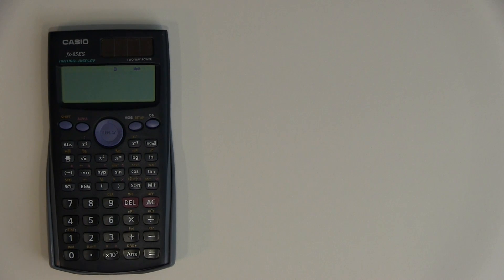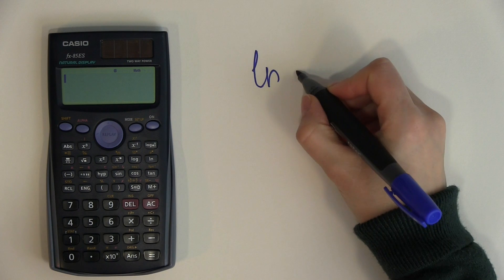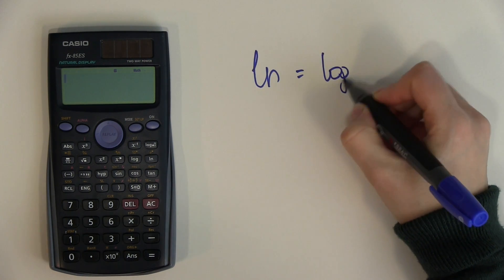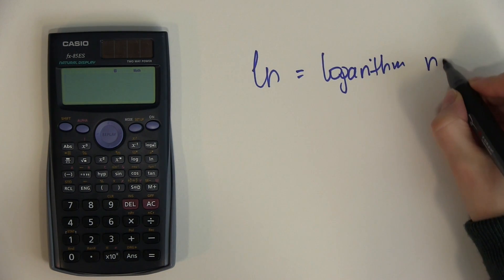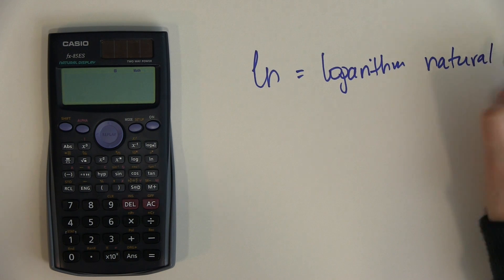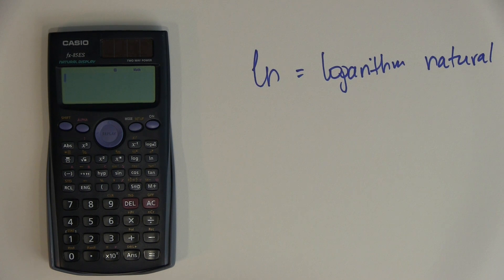There is one more feature I would like to spend some time on before we go to practical examples, and that is the LN button. LN stands for logarithm natural, and sometimes you need to use it — for example, when you're trying to calculate the log growth.